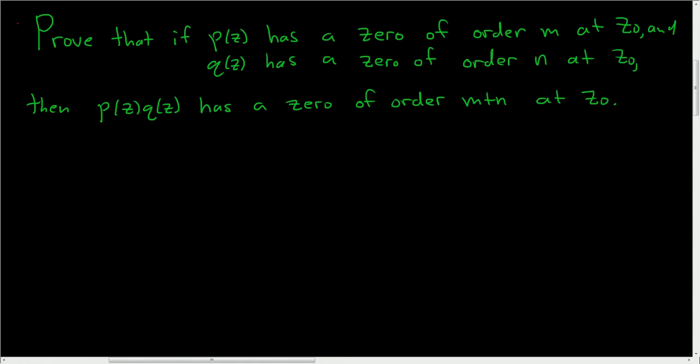Prove that if P of Z has a zero of order M at Z naught and Q of Z has a zero of order N at Z naught, then the product PQ has a zero of order M plus N at Z naught. This should be a pretty straightforward proof.